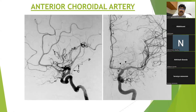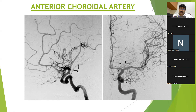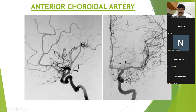A special mention on the choroidal artery: it is quite difficult to see the anterior choroidal artery and you need to spend more time locating it. The anterior choroidal artery has two segments — the cisternal segment and then the plexal segment.